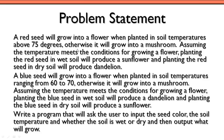We have a red seed, and we're told that this red seed will grow into a flower when planted in soil temperatures above 75 degrees. So we've got to be above 75 to get a flower. Otherwise, it will grow into a mushroom.